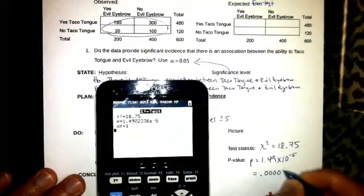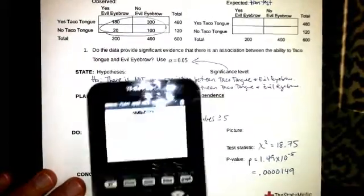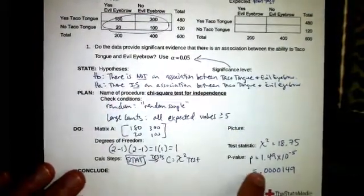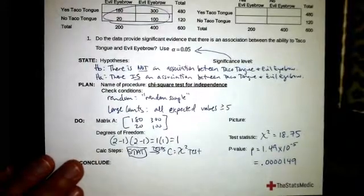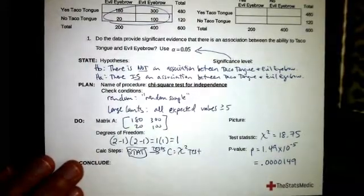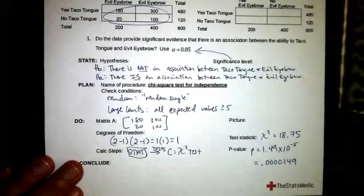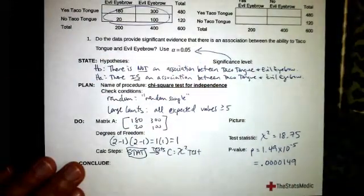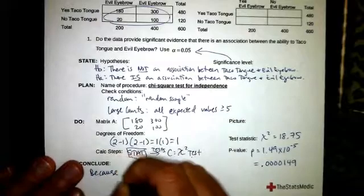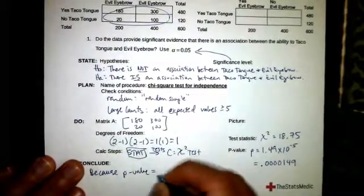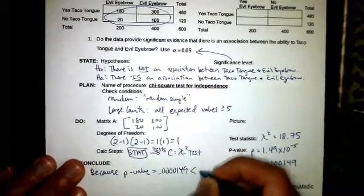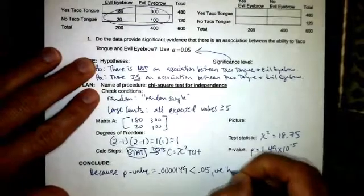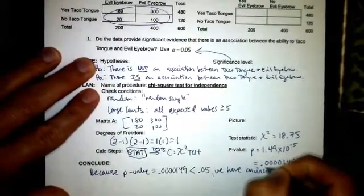So that means we take this and move it over five decimal places. So that's 0.0000149. That's a very unlikely occurrence that these are not associated. So we can conclude and say that because that value is so much smaller, that it's so much smaller than the significance level of 0.05, the p-value 0.0000149 is so much smaller than the five percent or 0.05 significance level, that we have convincing evidence.